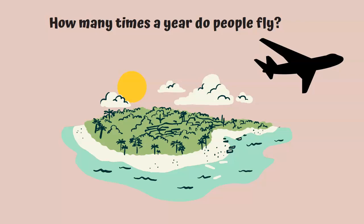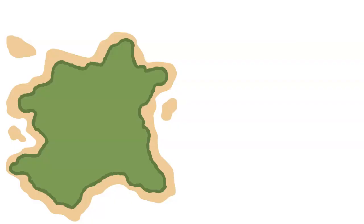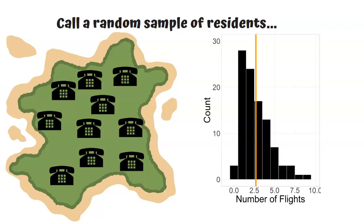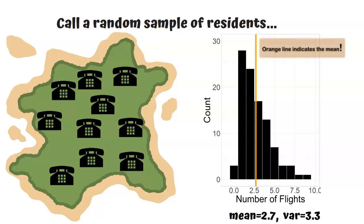So let's say that we go out and do a telephone survey on a random sample of the people on this island. Now, by the way, this is not actually a real island — it's a place that we've simulated. So we actually know that if everyone responds to the survey, we will see that the distribution of the number of flights per year that people take will look like this. The mean is 2.7 flights a year and the variance is 3.3.